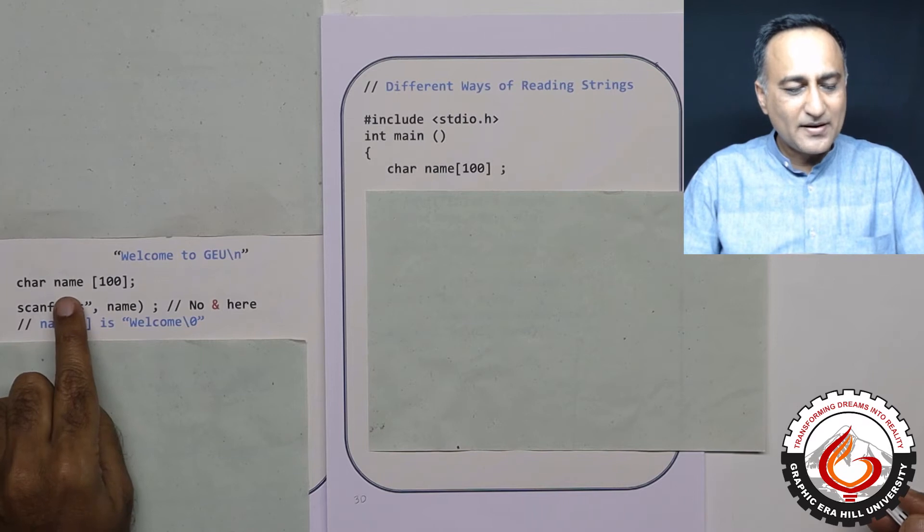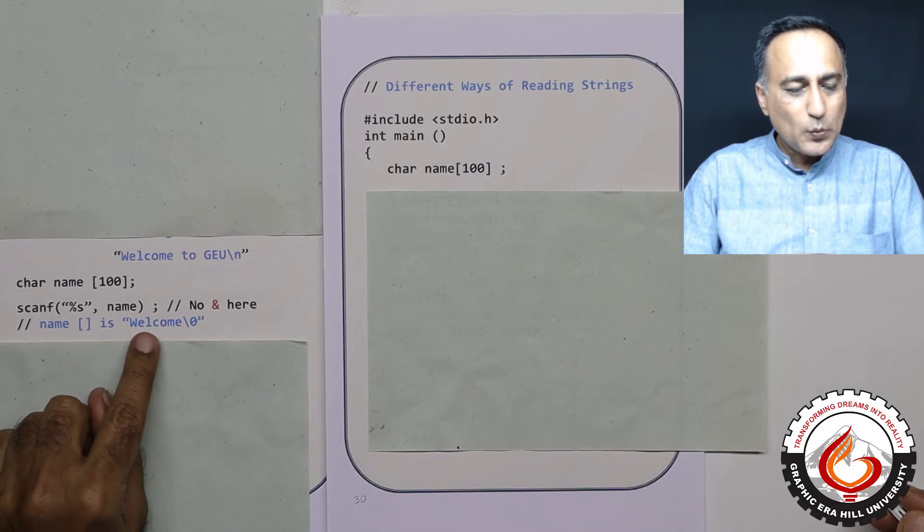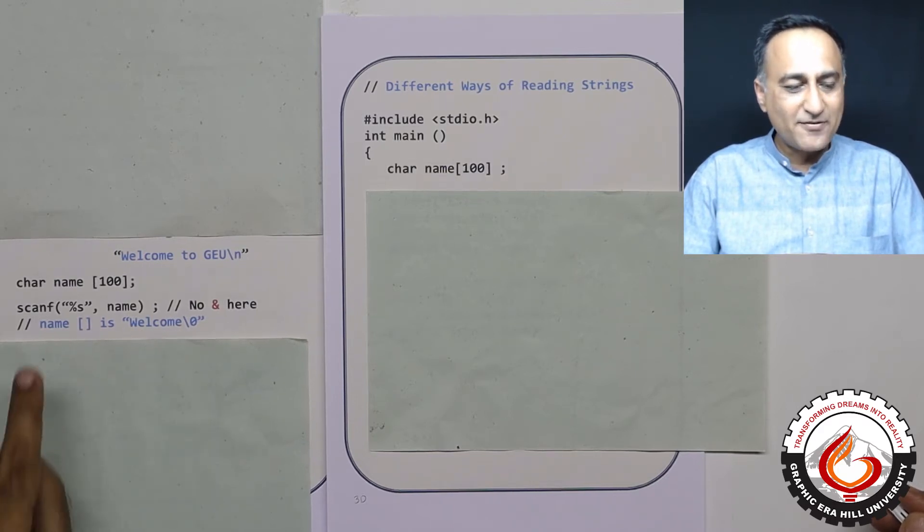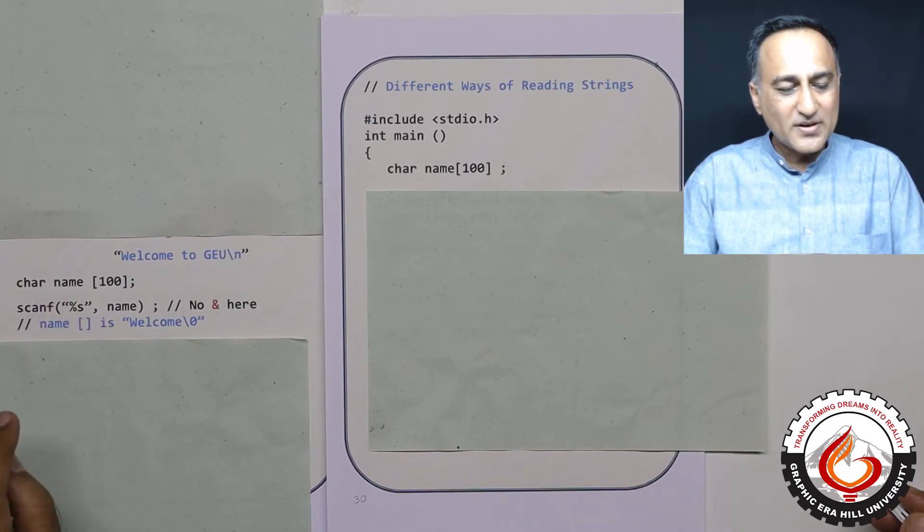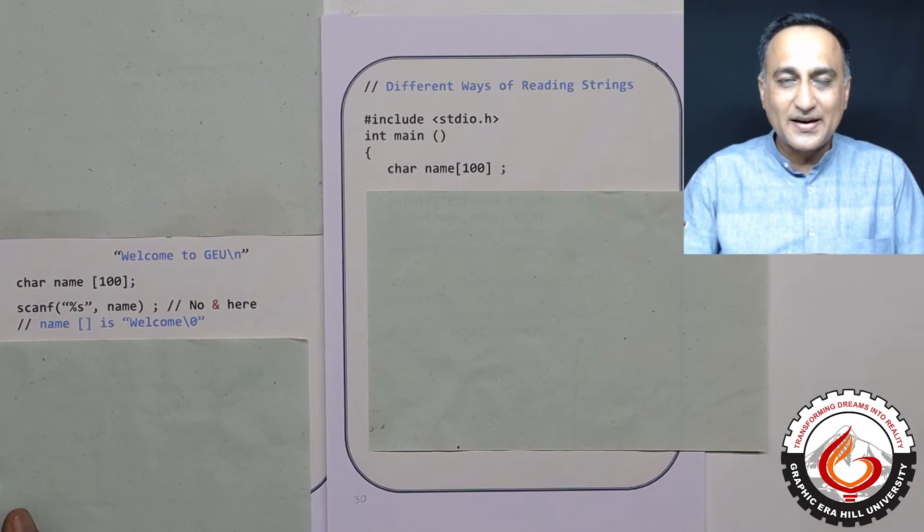And assume I have defined an array of characters called name with maximum capacity 100. Now if I read name using %s, what is going to happen is only 'welcome' and the null character is going to be automatically added by scanf and stored in name.